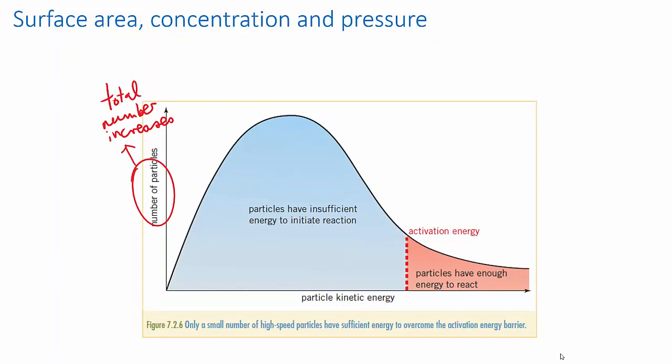Keeping all else the same, if we increase the surface area, concentration or pressure of one of the reactants, we're effectively increasing the number of reactant molecules per unit volume that are available to react. So we can redraw the distribution to show that there's more of everything, like this.